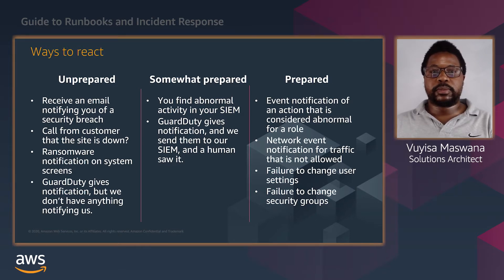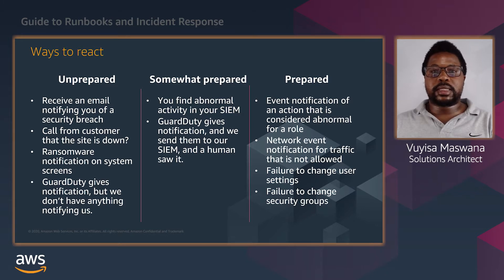In the case of an unprepared customer, the customer would be receiving the email notifying them about the breach — this would be the first time that they are becoming aware of the situation. They could also be getting a call from their customer telling them that the site is down. In other cases, they would be getting a ransomware notification on their screens demanding ransom in order for control of their resources to be handed back to them. Some customers even have GuardDuty turned on, but GuardDuty is not notifying anyone about events.